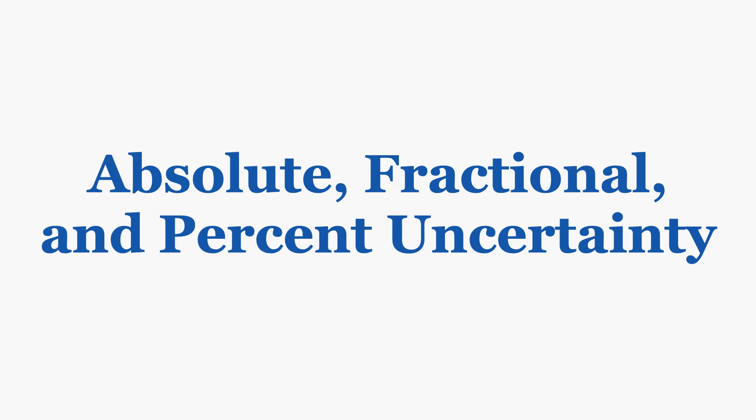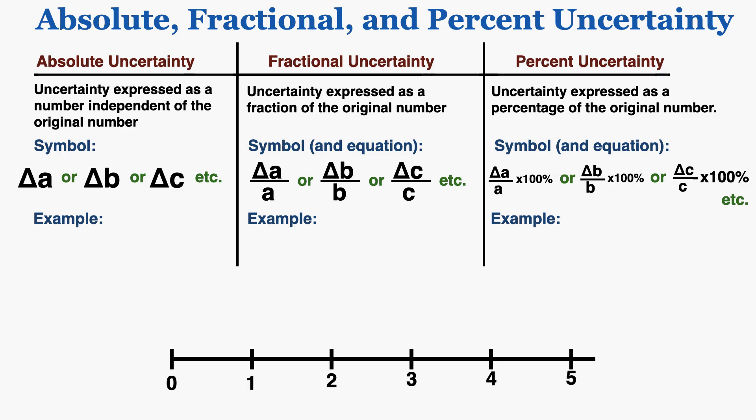This lecture is about the definition and difference between absolute, fractional, and percent uncertainty. Absolute uncertainty is uncertainty expressed as a number independent of the original number. The symbol we use for absolute uncertainty is the symbol delta followed by the letter or variable for what we're measuring.